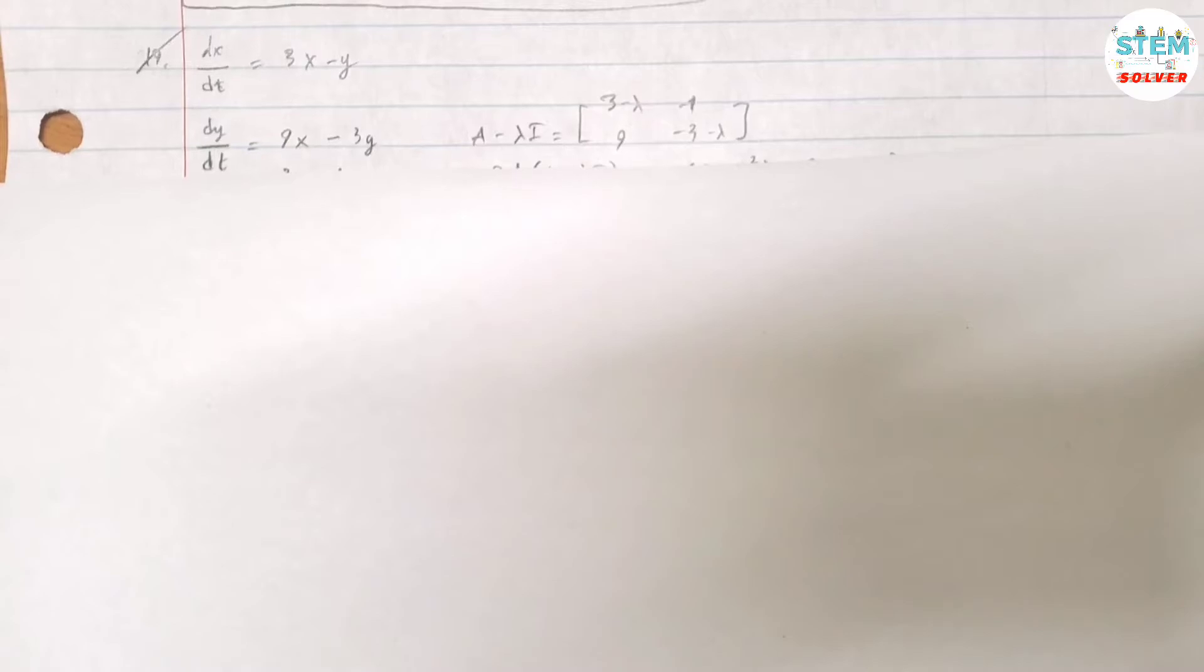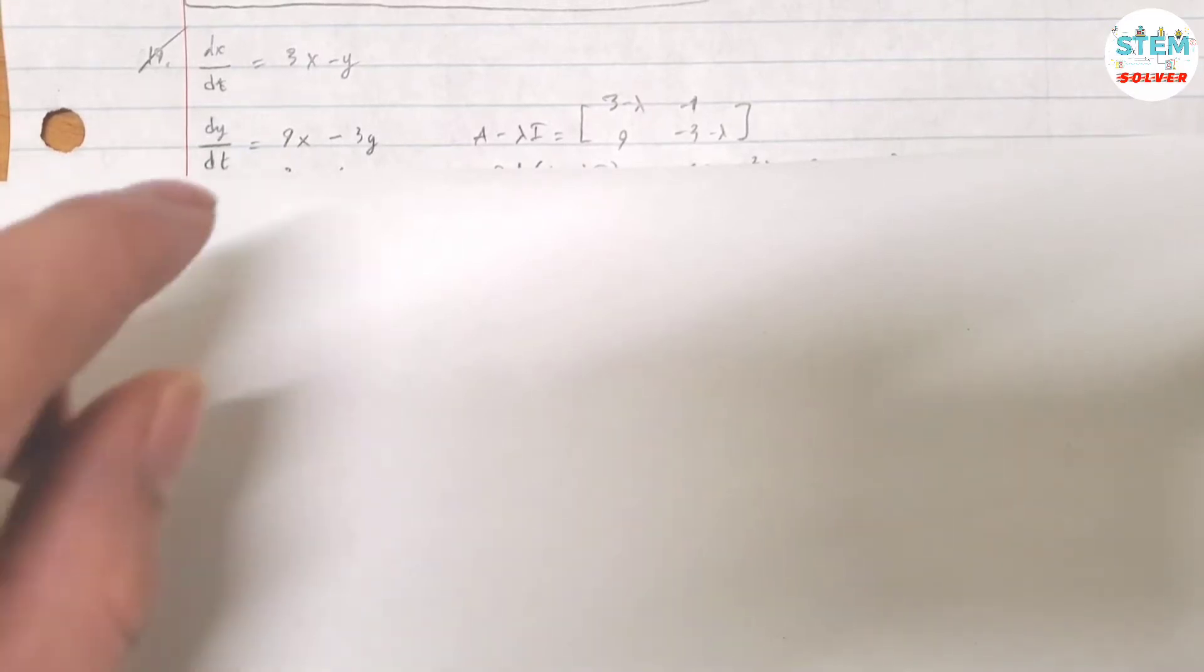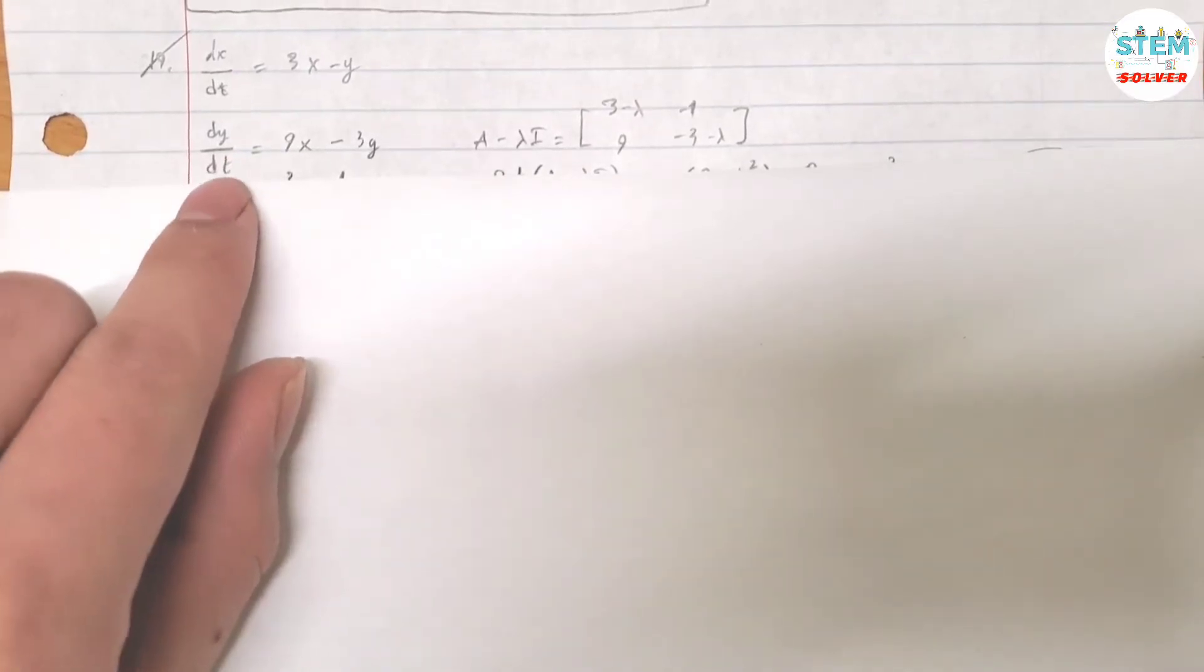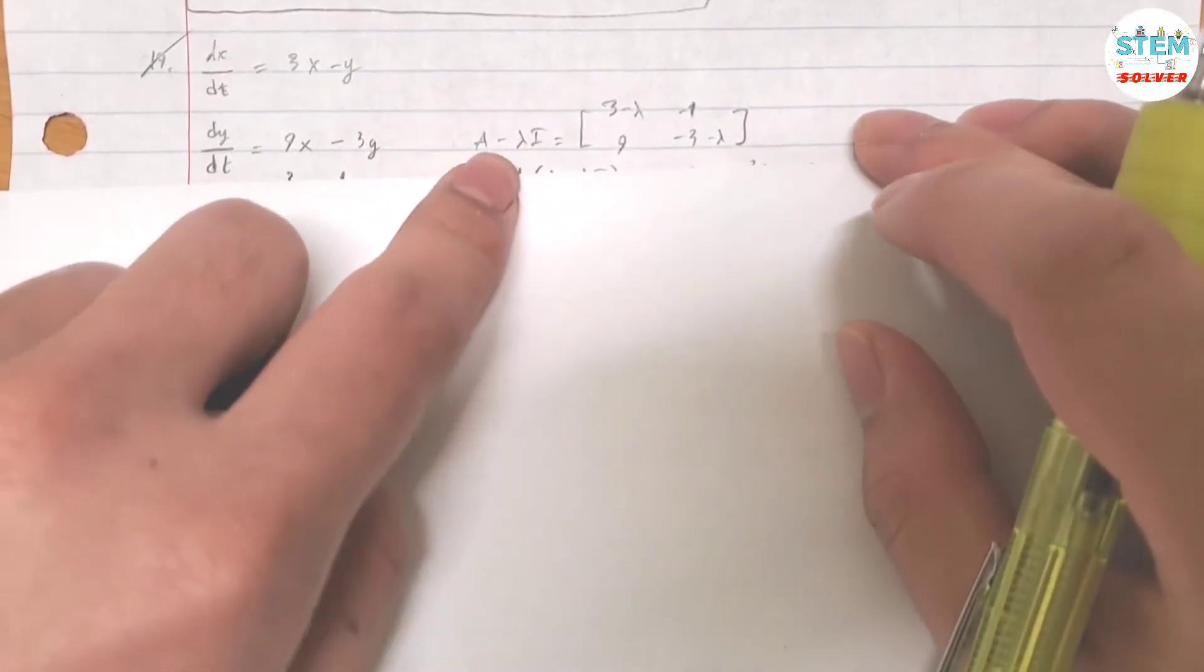Find the general solution of the given system. Here is the given system: dx/dt and dy/dt. First of all, you need to find A minus lambda I.